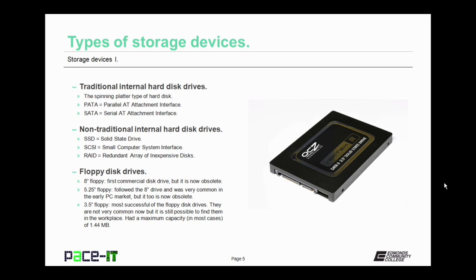I need to cover this, but you probably won't find these in a modern system — the floppy disk drive. Floppy disk drives were first commercially successful with the 8-inch floppy, which is extremely obsolete now. It was replaced by the 5¼-inch floppy disk drive, which is also obsolete. It was replaced by the 3½-inch floppy, the most successful of all the floppy disk drives. They're not very common now, but you may still come across one in the workplace, so you need to know about them.